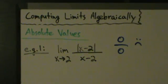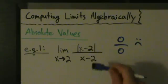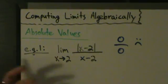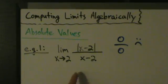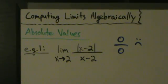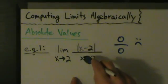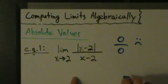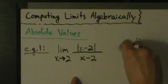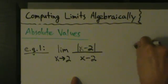So we think, okay, 0 over 0 — is there something we can factor? We look at this and, no, not really, there's really no way we can factor that. What's different here is we have the absolute value. So if you try direct substitution and you get 0 over 0 and you have an absolute value, then what you should do is something different.